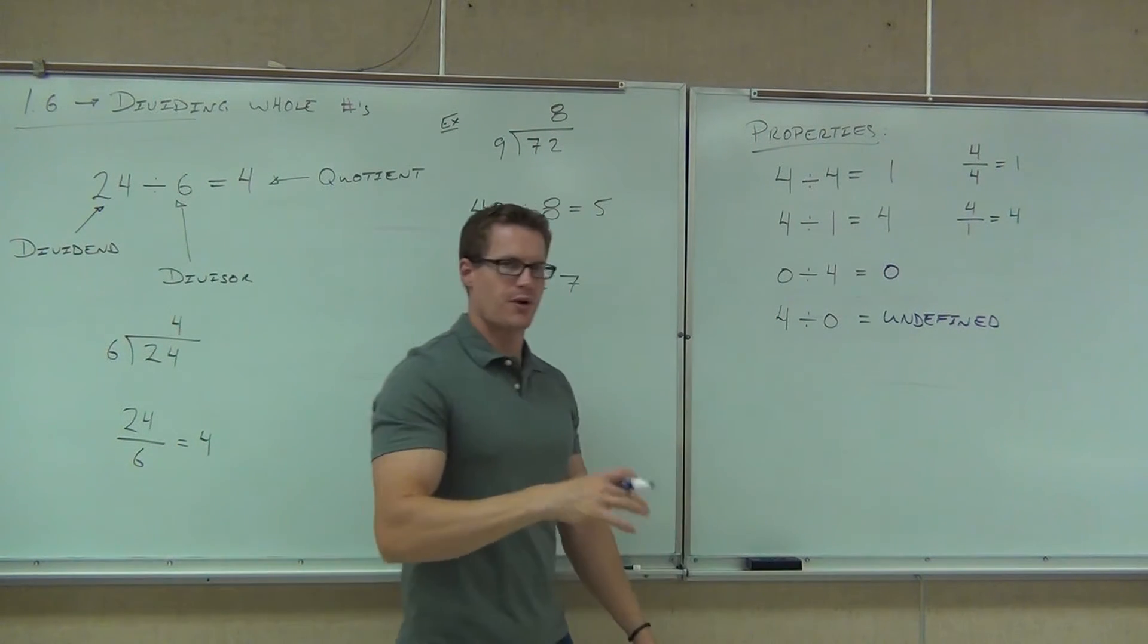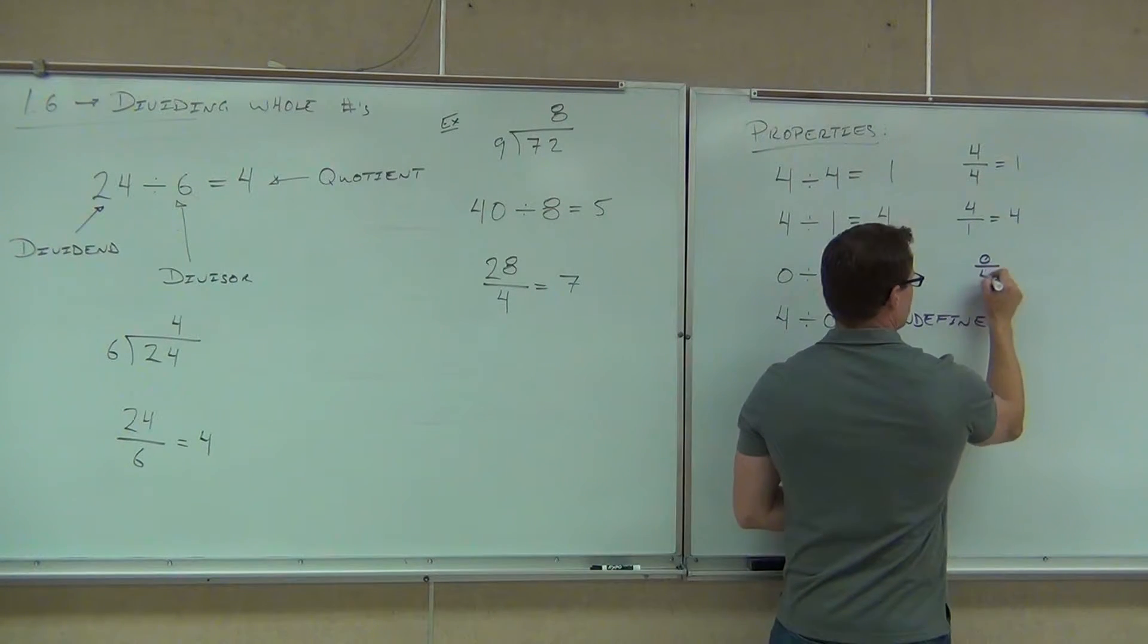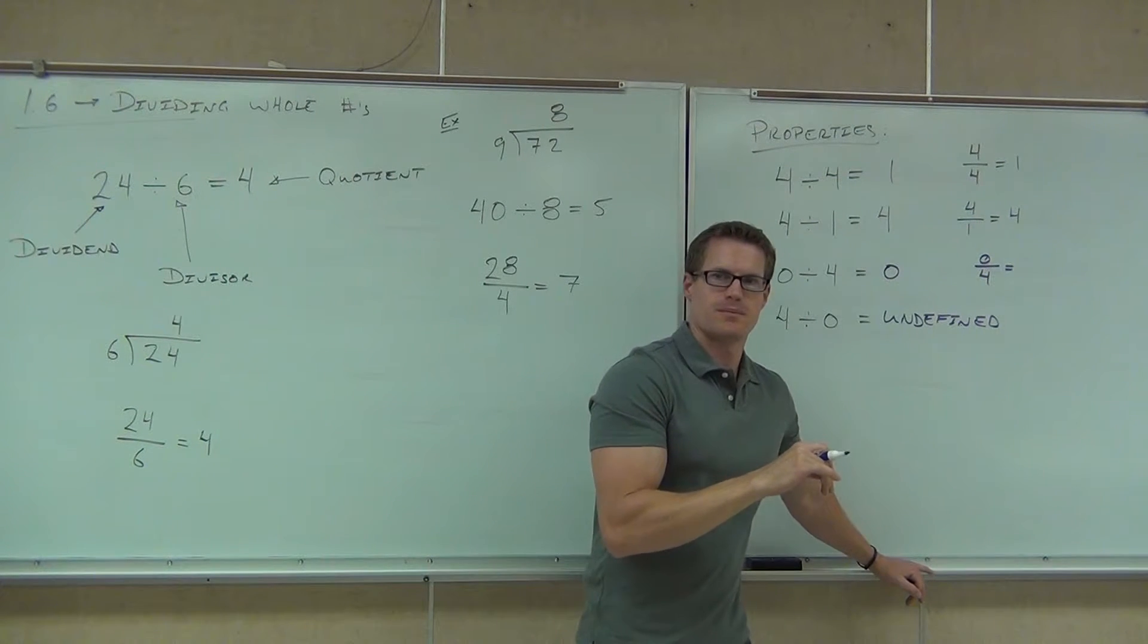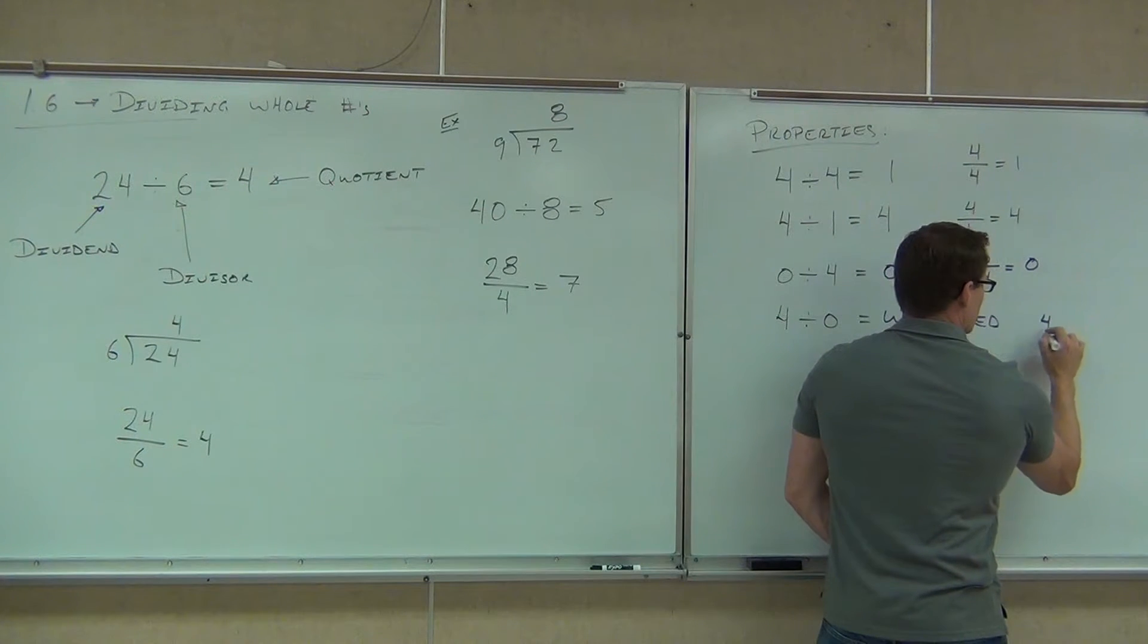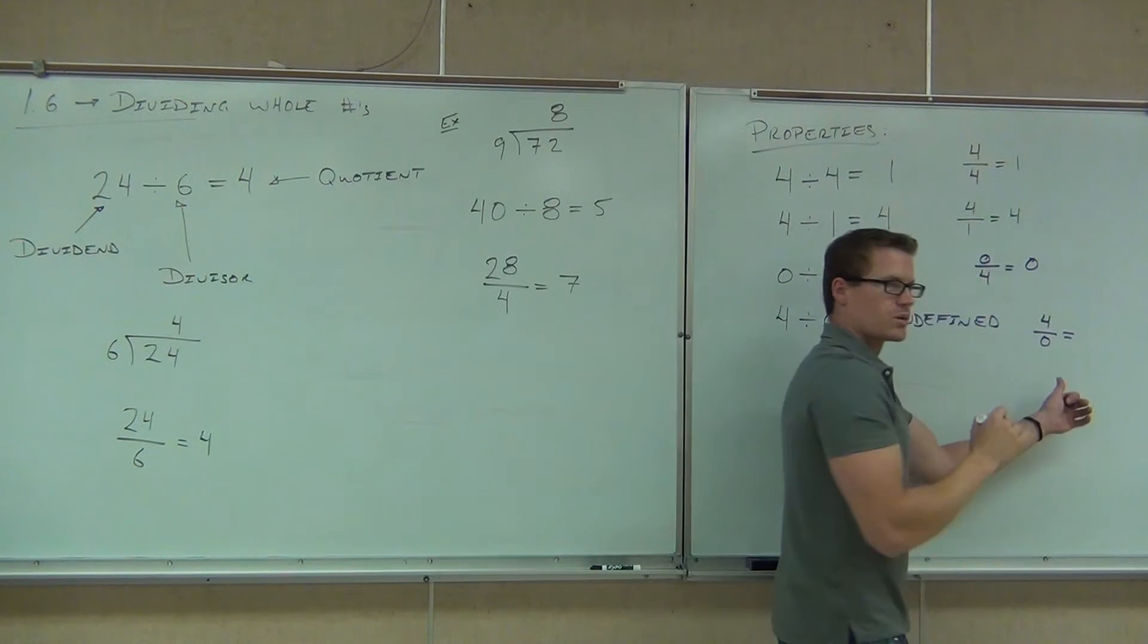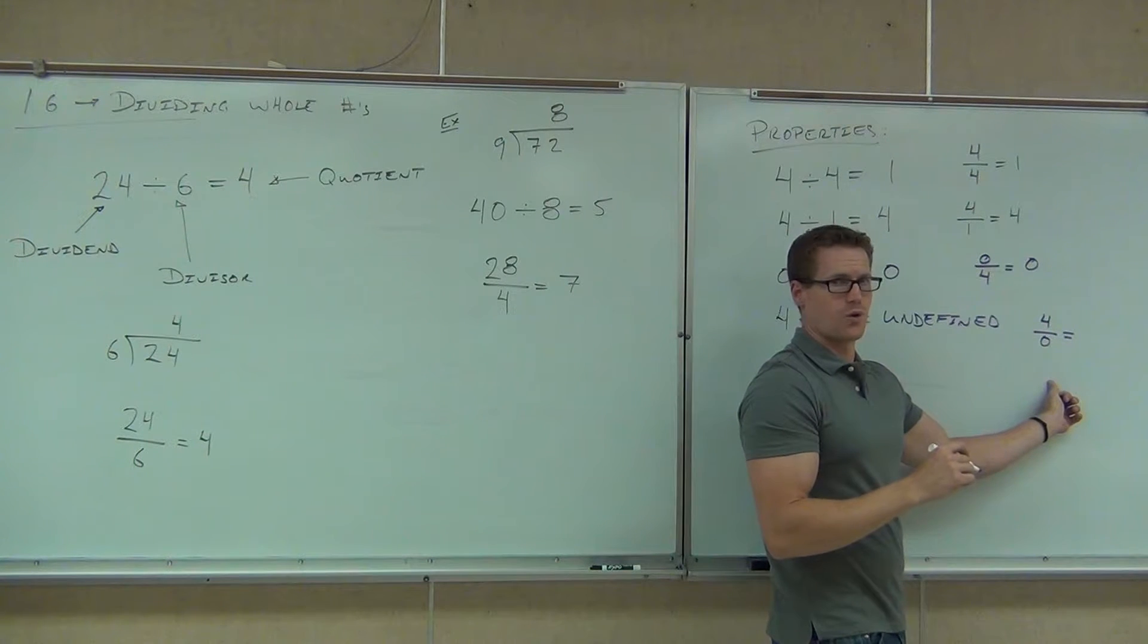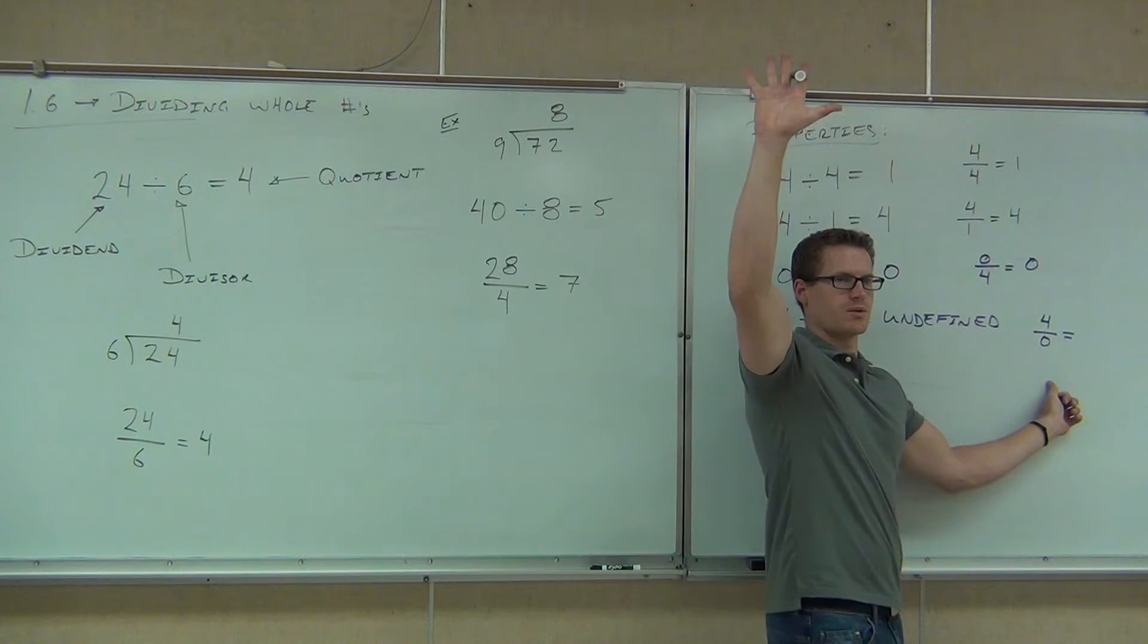That implies two things about fractions for us in the future. It says that if we have zero divided by a number, what's zero divided by a number then? Zero. This one's just fine. If we have a number divided by zero, is this one okay? No. This one is undefined. It doesn't equal zero. It doesn't equal four. It doesn't equal anything. It's just undefined. How many people are clear on that? Raise your hand if you're clear on that.